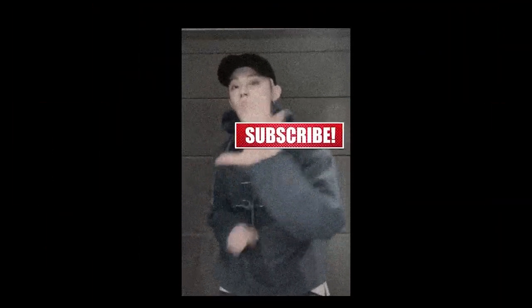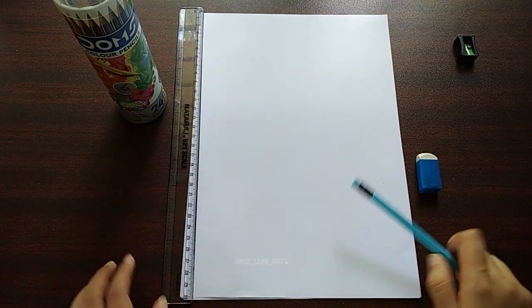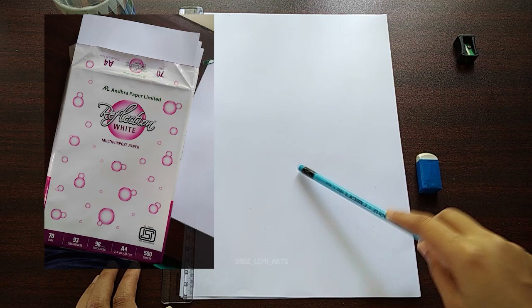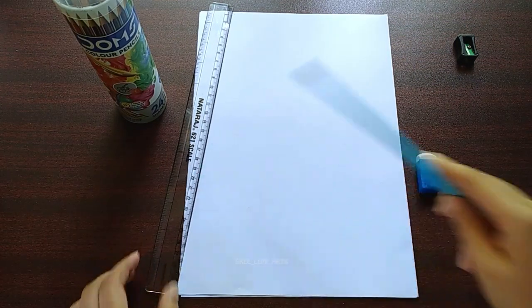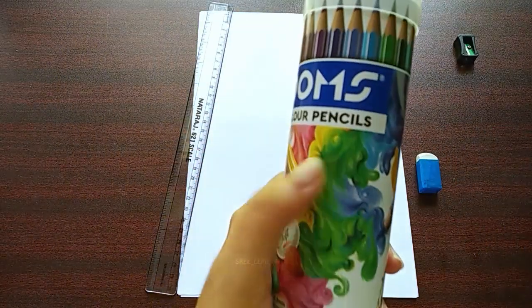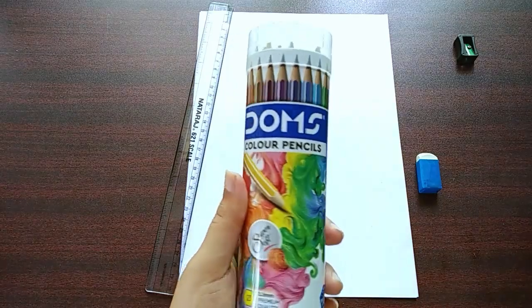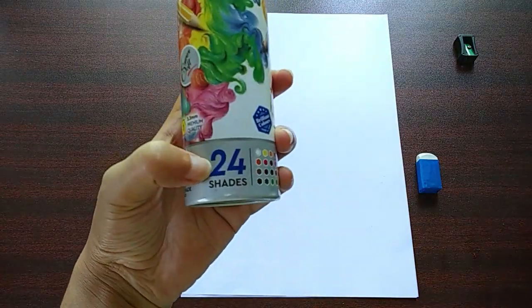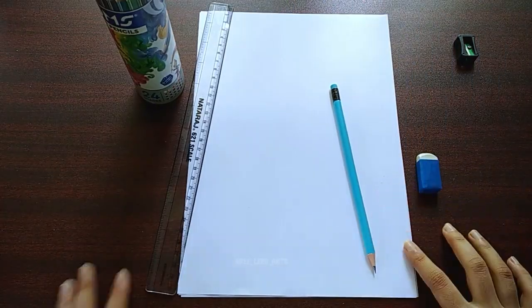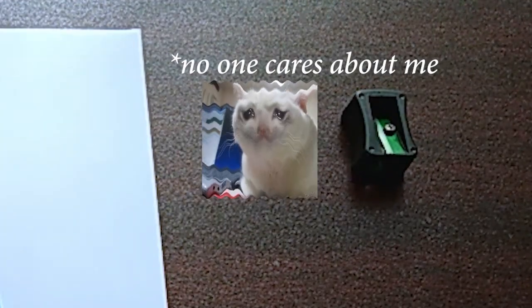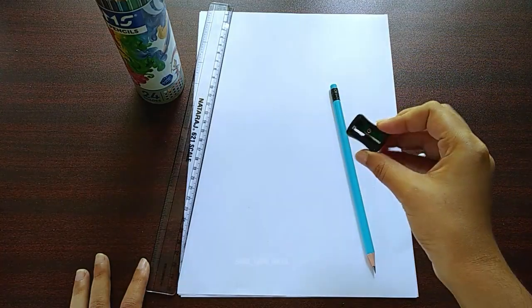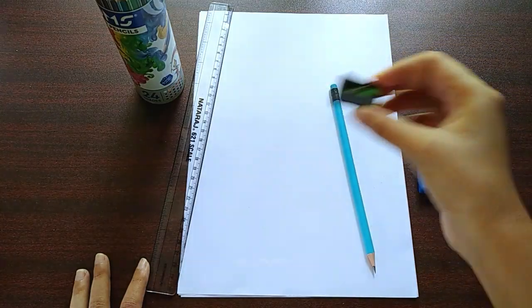Please subscribe! So the materials required are a sheet of paper—this is the normal A4 size printing paper that you get from the market—then a long scale, then an eraser, then we got the Doms color pencils. These are the colors that I use for my artworks. It consists of 24 shades and it's just 150. And of course you need a pencil, and I guess that's all. Wait, you need to have a sharpener. You should keep your color pencils sharp when you use them and that's it.